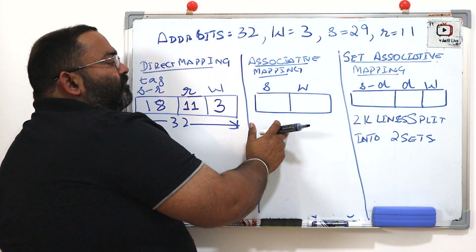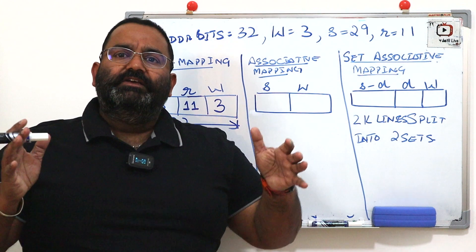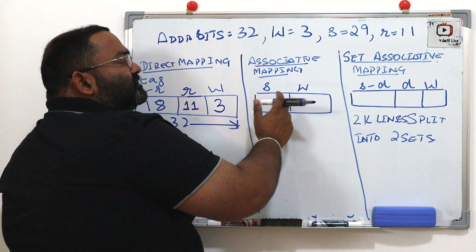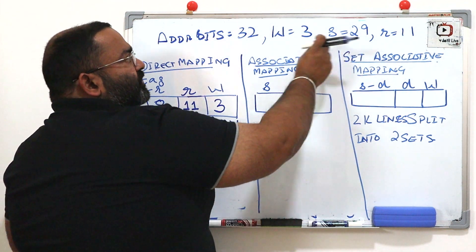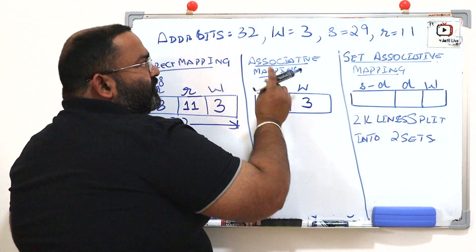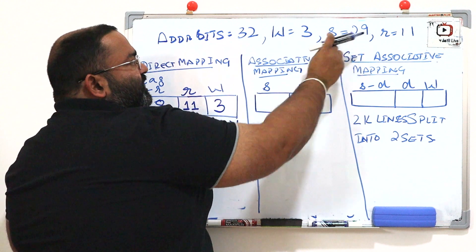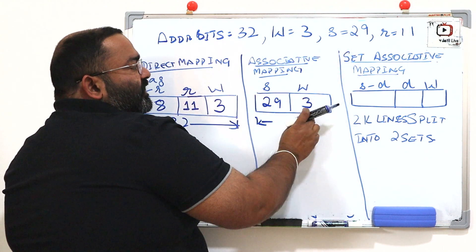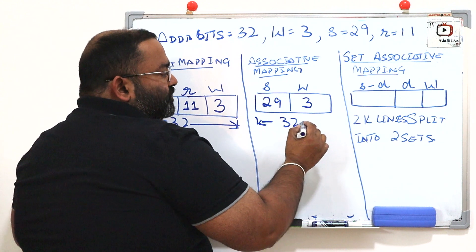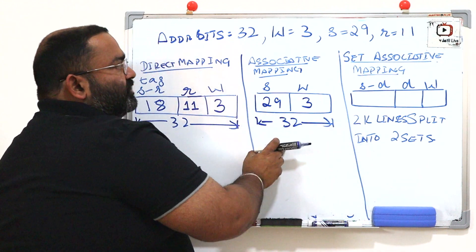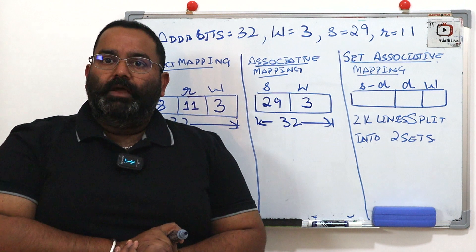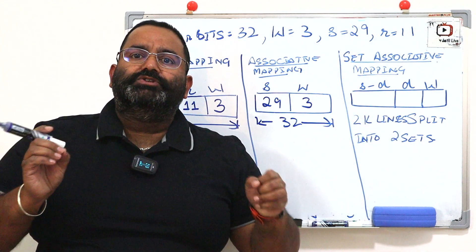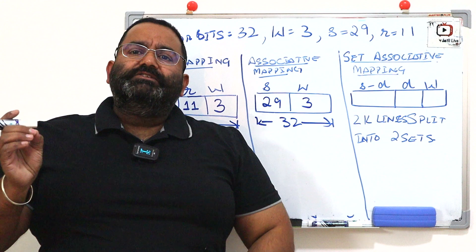For associative mapping, the split is simply s and w, which is the easiest to calculate. S = 29 and w = 3. Adding them: 29 + 3 = 32 bits. That is the address split for associative mapping.